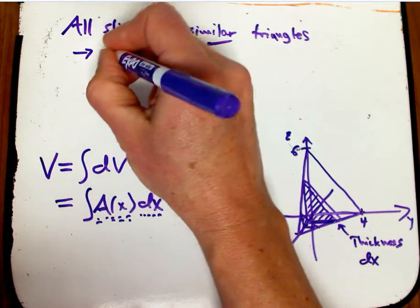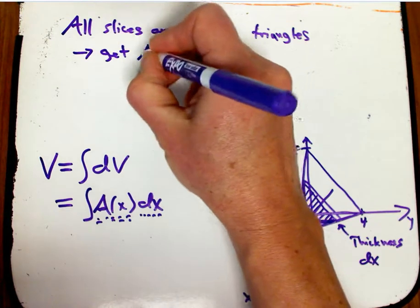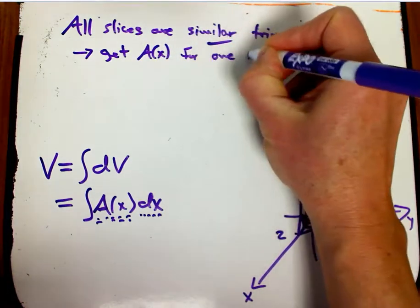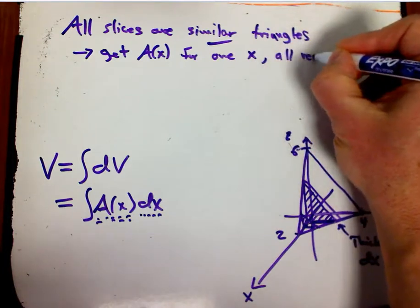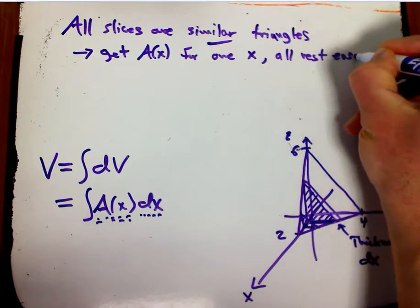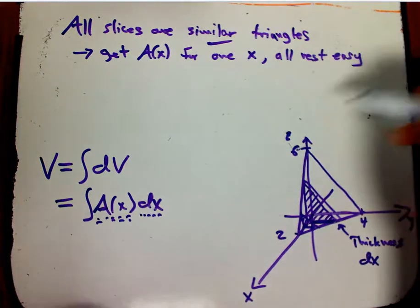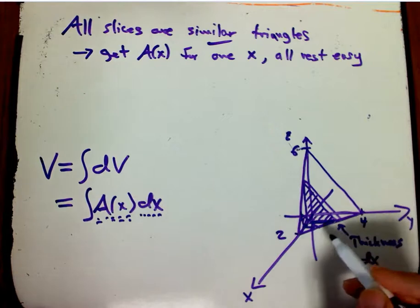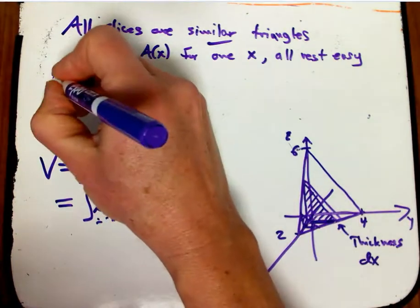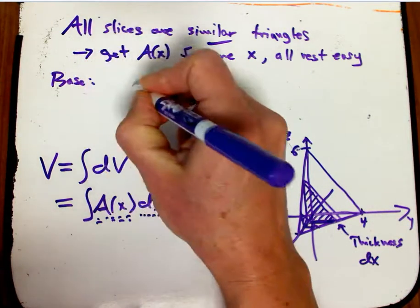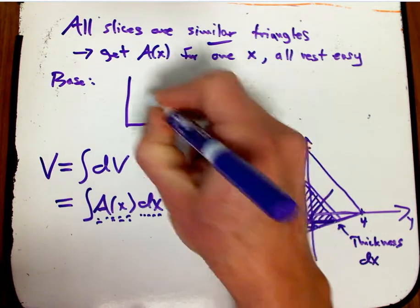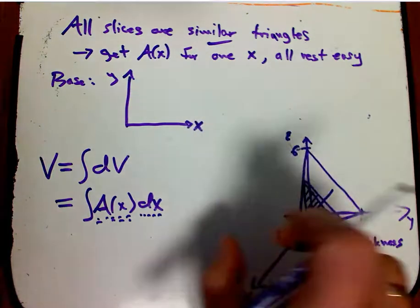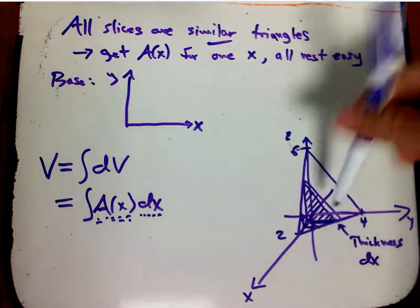And so, if we can get one area, like for one value of x, all the rest should be pretty easy. They're going to be proportional. But we need to know what the proportionality factor is. That means it's a really good idea to draw the base triangle. So, that's going to be in the xy plane. I've kind of rotated this around. So you're looking at the xy plane from the top, but in the usual way where x is to the right.